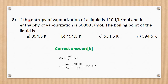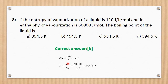Question number 8. If the entropy of vaporization of a liquid is 110 joules per Kelvin per mole and its enthalpy of vaporization is 50,000 joules per mole, what is the boiling point? The formula is T = delta H / delta S = 50,000 / 110 = 454.545 K. The correct answer is B.